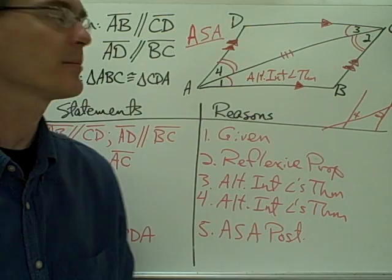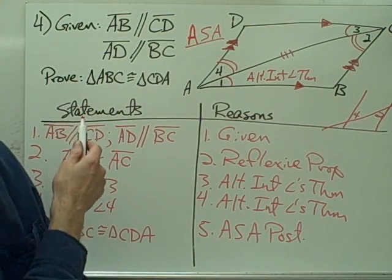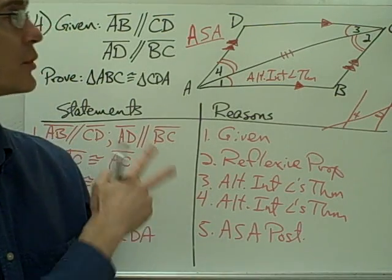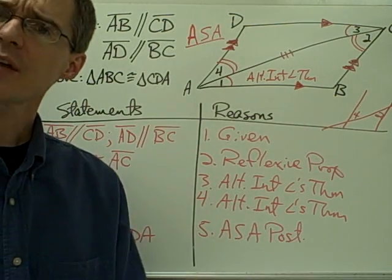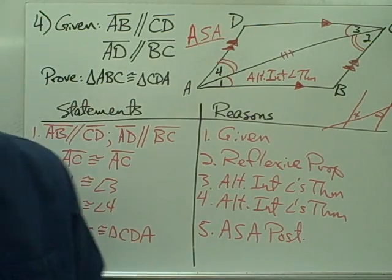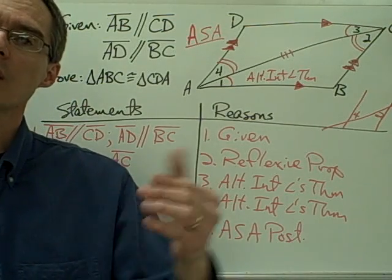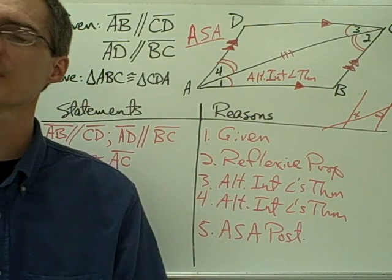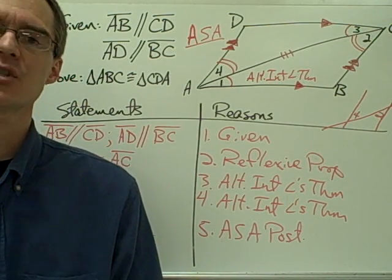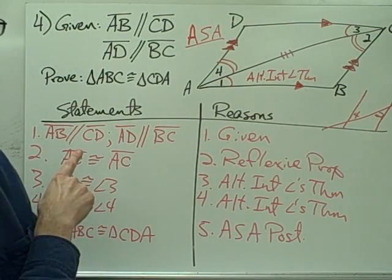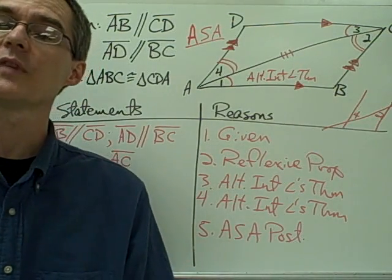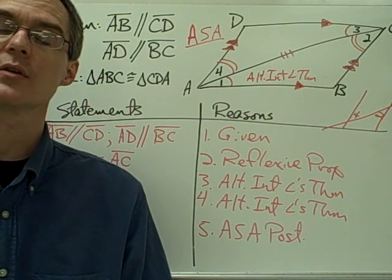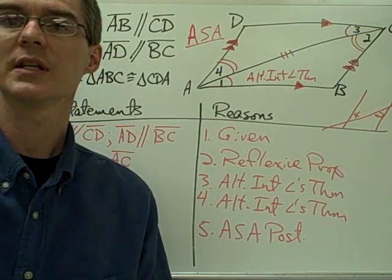Now you have a couple more examples in your notes — examples five and six — which are similar to these, in which you're trying to prove two triangles are congruent. I want you to try those on your own. You also have examples seven and eight, which take our ability to show two triangles are congruent a step farther. We'll take a look at those in class tomorrow, but I encourage you to try them as well.